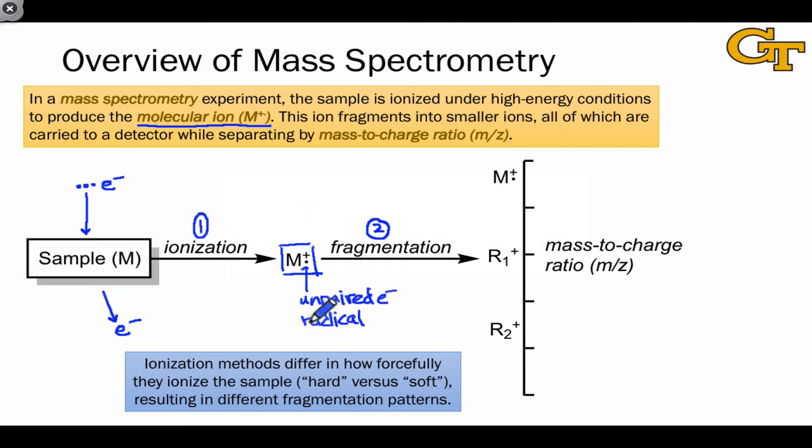Ionization methods in stage one can differ in how forcefully they ionize the sample, and this is often described in terms of hard versus soft conditions. Hard and soft conditions lead to different fragmentation patterns, with higher energy, more vigorous conditions leading to more fragmentation in general. There are situations, though, in which fragmentation is undesirable, especially when we're studying delicate, large-scale molecules like proteins, for example. And so soft ionization methods have their place as well.